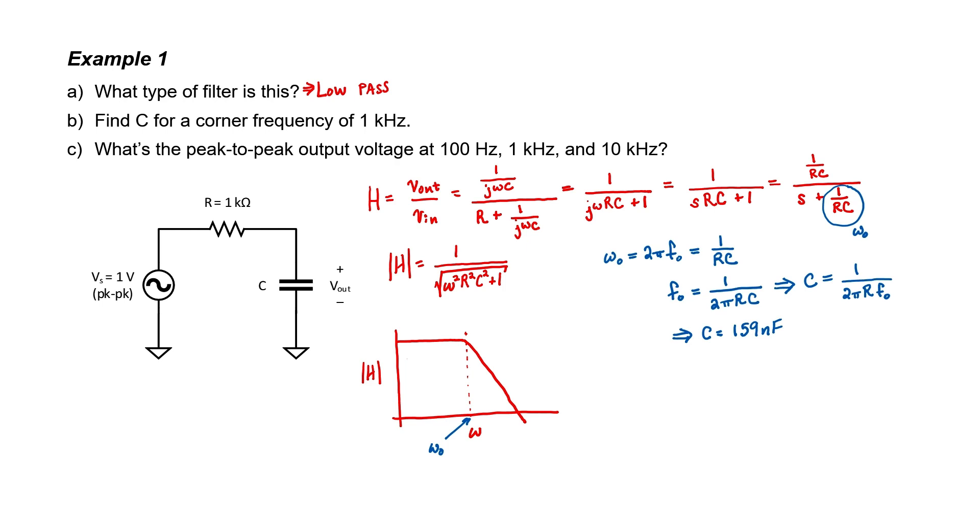For part c, we're interested in the peak-to-peak output voltage. We're given that the input voltage is 1 volt peak-to-peak. Since the transfer function's magnitude is just the output voltage divided by the input voltage, we can just find the transfer function for each of these three cases.